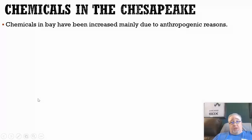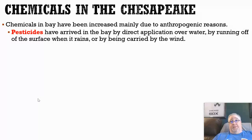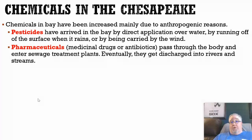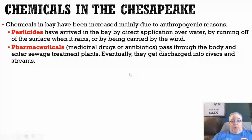Now, chemicals. Lots of chemicals can get into the bay. Here are just a couple of things — pesticides. We've talked about this before; pesticides can travel by water or through the air and can get into the bay. Pharmaceuticals — these are things like medicinal drugs, antibiotics, even over-the-counter drugs. These things end up getting into waterways basically through sewage. Anytime we put these drugs into our body, they're going to come out in our urine and in our feces, and those things can eventually get into rivers and streams and into the bay just because they pass through the human body.